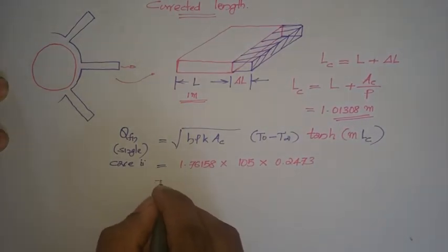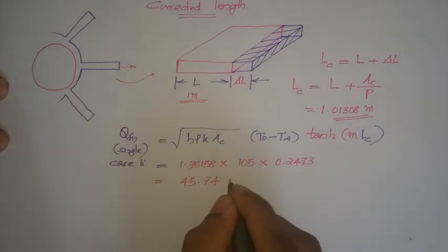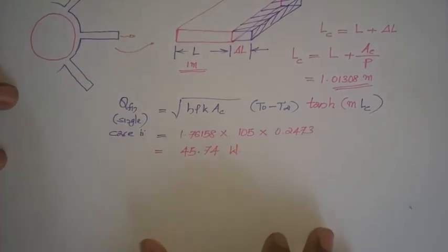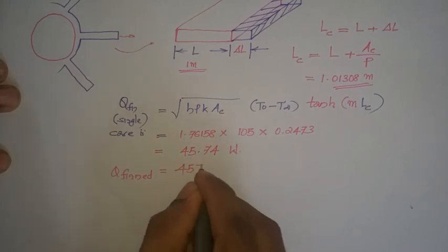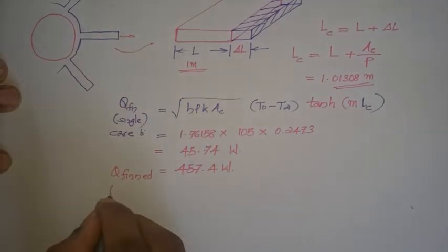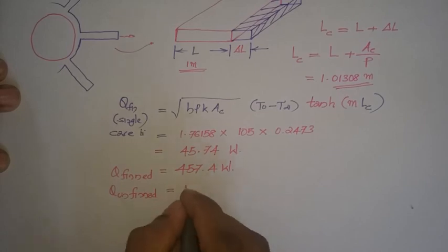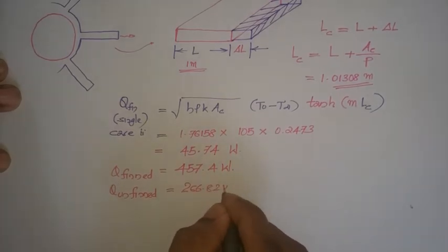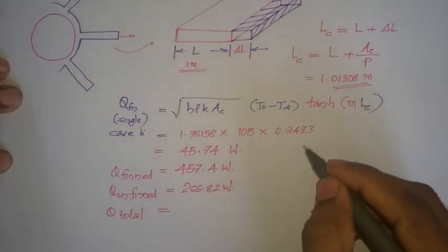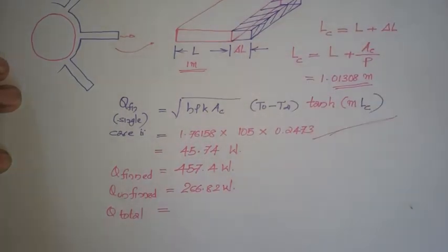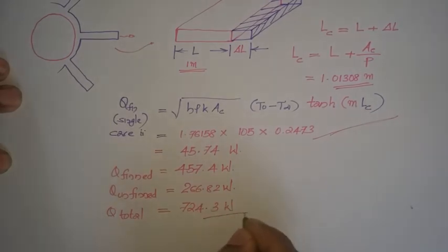From this single fin result of 45.74 W, Q_finned = 10 × 45.74 = 457.4 watts. Q_unfinned remains the same at 266.82 watts. Therefore Q_total = 457.4 + 266.82 ≈ 724.3 watts, confirming that the corrected length approach gives essentially the same answer. Thank you.